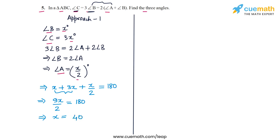So x is 40, which means that angle B is equal to 40 degrees. And angle C is thrice of angle B, so that should be equal to 120 degrees. And angle A is x by 2 degrees, so angle A should be equal to 20 degrees. So that's the answer. Angle A, angle B, angle C are 20 degrees, 40 degrees, and 120 degrees respectively.